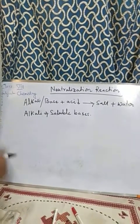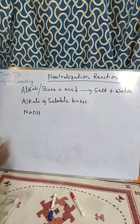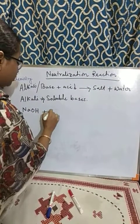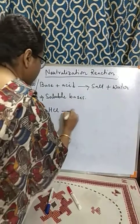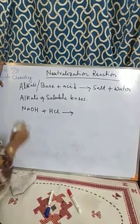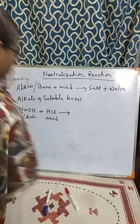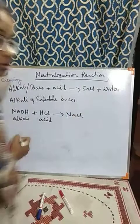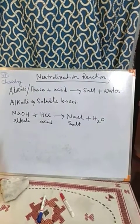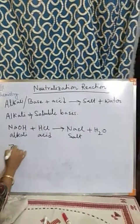Let us see some examples of neutralization reaction. If we take sodium hydroxide (NaOH) solution and add hydrochloric acid (HCl) — NaOH is the alkali or base and HCl is the acid — they will react together to produce a salt, sodium chloride (NaCl), along with water. This is a neutralization reaction.